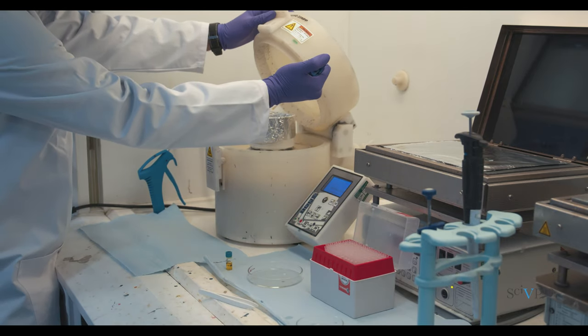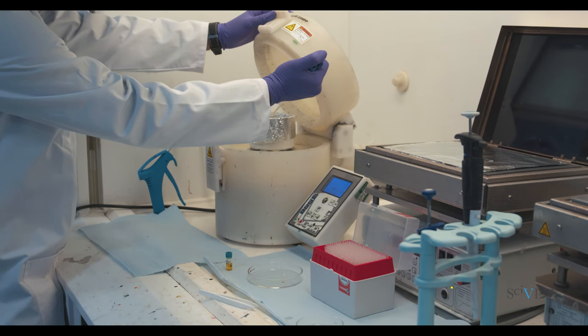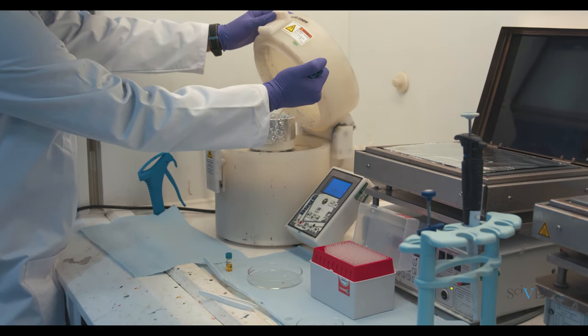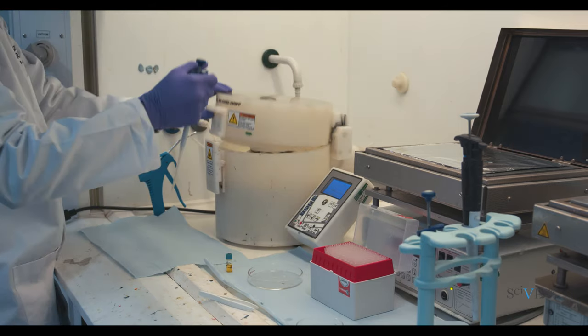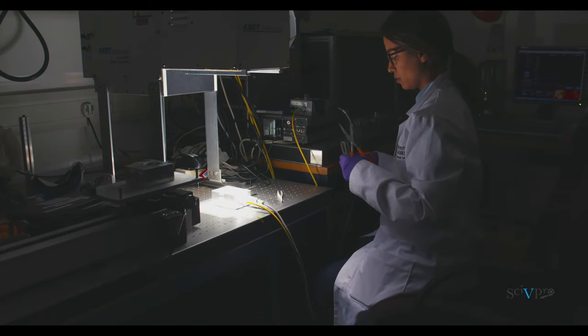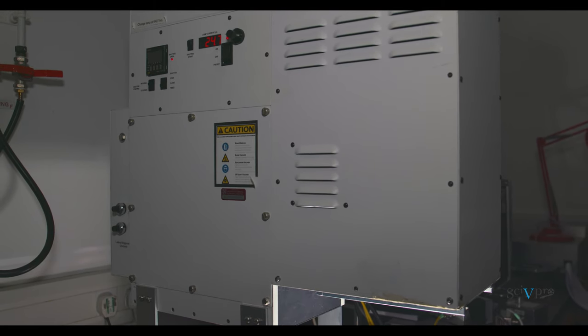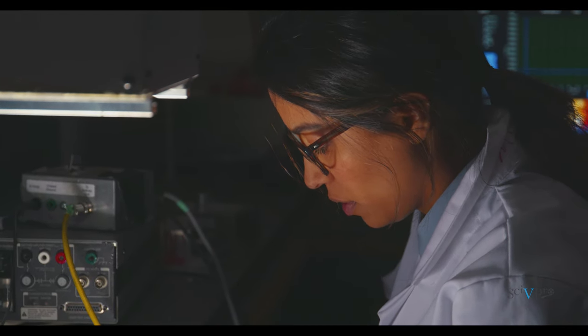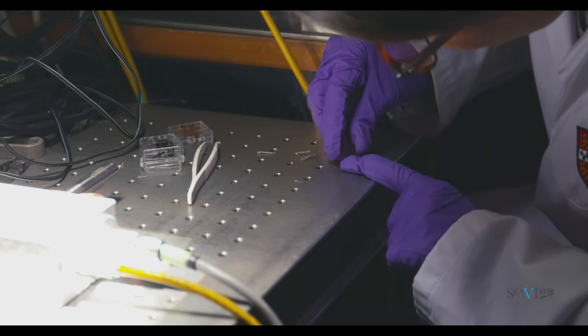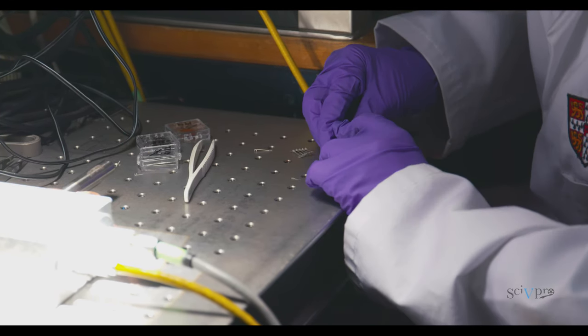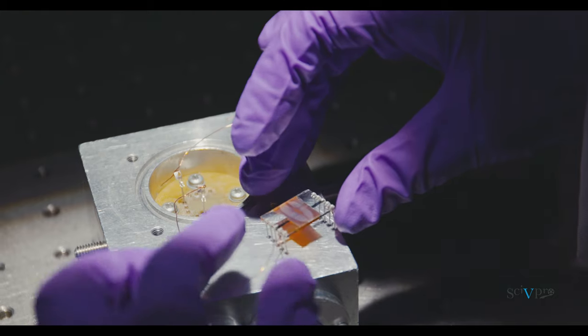The precursor solution was spin coated at 6000 rpm for 30 seconds under ambient conditions. Turn on the solar simulator and let it warm up. Set the irradiance to 1 sun. Connect the IBC solar cell electrodes corresponding to the 100 micron gap to the multimeter using electrical connection legs.